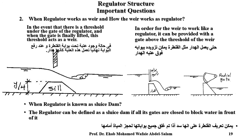Regarding the relationship between regulators and weirs: there is a sill under the gate of the regulator, and when the gate is fully lifted, the sill acts as a weir on the left and right sides. For a weir to work as a regulator, it can be provided with a gate above it. A regulator can be defined as a sluice dam if all its gates are closed to block water in front of it.